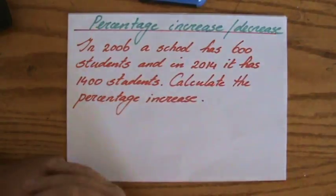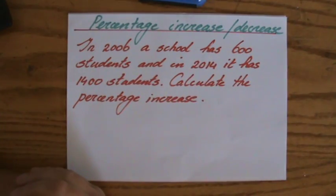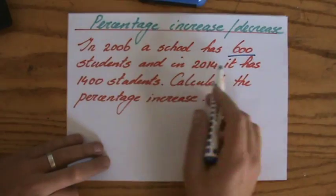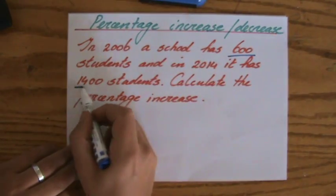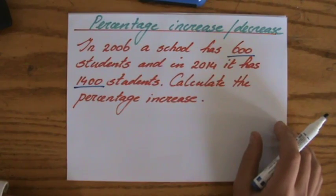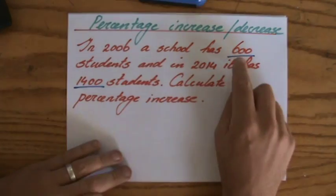We've also compared quantities in percentage. Now for percentage increase or decrease: In 2006 a school has 600 students, and in 2014 it has 1400 students. Calculate the percentage increase. As you can see from 600 to 1400, that is more than double.